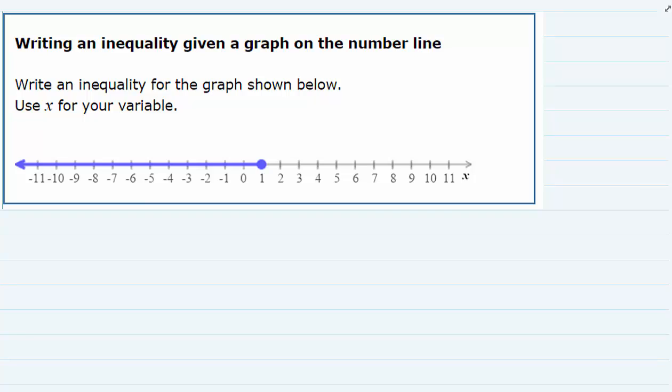We're asked to write an inequality for the graph below and we're asked to use x for the variable. So since we get to decide which side we're going to put the x on, my suggestion is to always put the x on the left hand side and then we really only have two things to figure out.